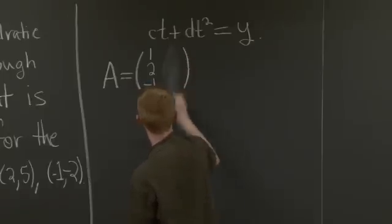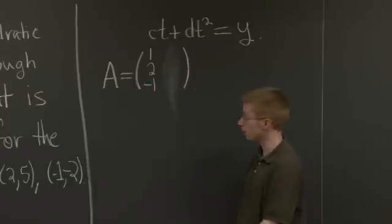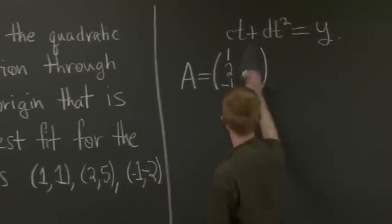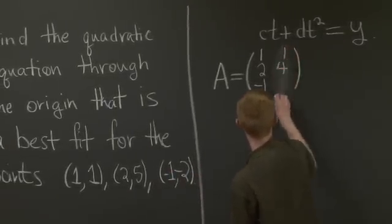And then my second column is going to be the squares of these first coordinates: 1, 4, and 1.